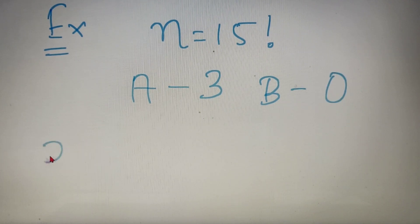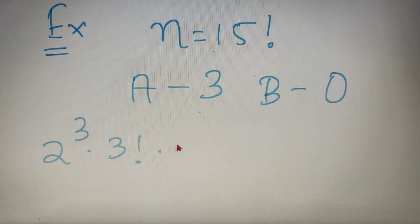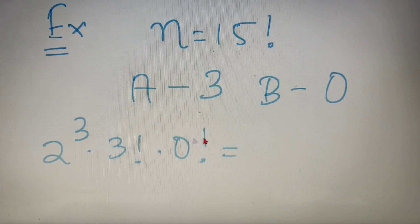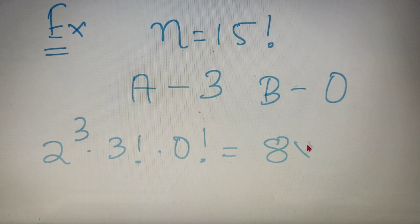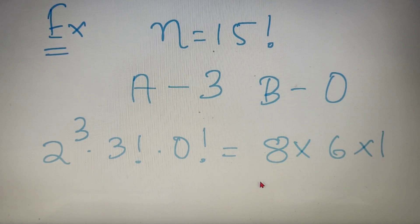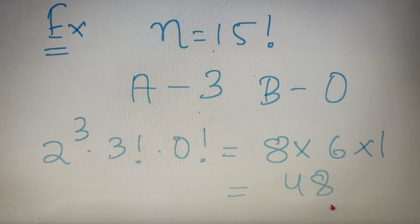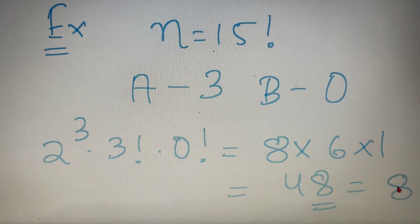So according to the formula, we have 2 to the power 3, into 3 factorial, into 0 factorial. Now 2 to the power 3 is 8, 3 factorial is 6, and 0 factorial is 1. Upon calculation it comes out to be 48, and the last digit of 48 is 8. So the final answer is 8.